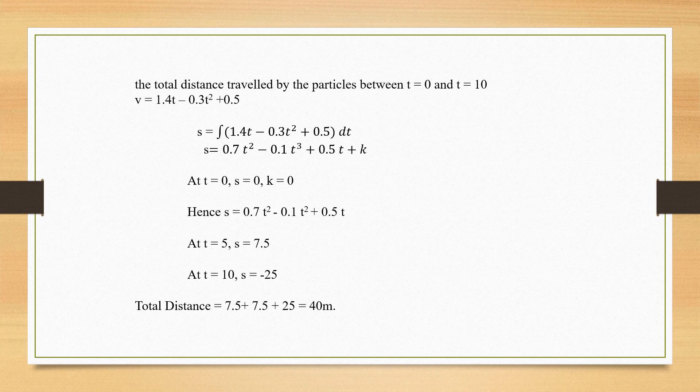Evaluating at T = 5 gives S = 7.5 m, and at T = 10 gives S = −25 m, meaning the particle travels in the negative direction. The total distance is calculated as 7.5 (from 0 to 5) plus 7.5 (from 5 to 10) plus 25 = 40 meters. This concludes that the particle travels 40 meters between T = 0 and T = 10.